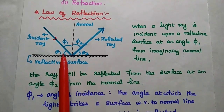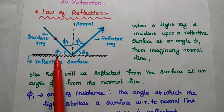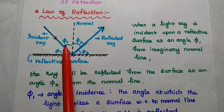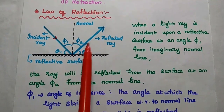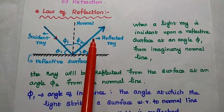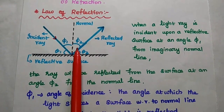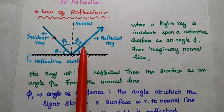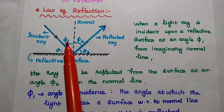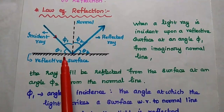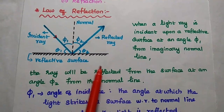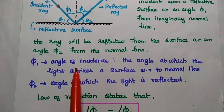Here theta 1 is the angle of incidence with respect to this interface. Phi 1 is called the angle of incidence. Phi 2 is the angle at which the light is reflected, hence it is called the angle of reflection. From this diagram, we can state the law of reflection: the angle of incidence is equal to the angle of reflection.